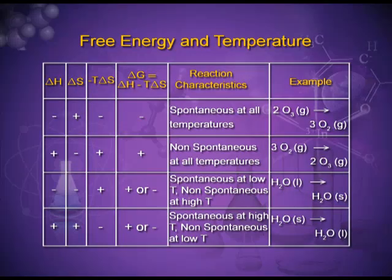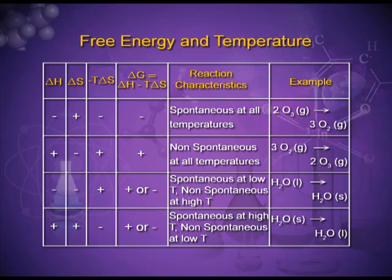In the third case, if delta H is negative and delta S is also negative, then the process is spontaneous at low temperature but non-spontaneous at high temperature, because the sum total should be negative. In the fourth case, when delta H is positive and delta S is also positive, the process is spontaneous at high temperature and non-spontaneous at low temperature.